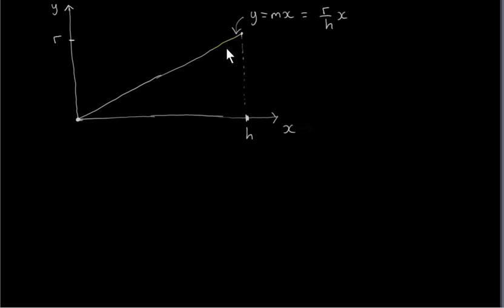What we do is rotate this line about the X-axis. If you can imagine rotating this line about the X-axis, we will generate a cone whose height is H and whose radius is R. So H and R are two fixed values.